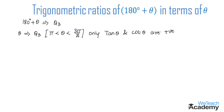Now let us find the values of trigonometric ratios of 180 degrees plus theta in terms of theta. Let us begin with sine. So sine of 180 degrees plus theta: since 180 degrees plus theta lies in the third quadrant, and in the third quadrant only tan and cot are positive, sine becomes negative. Also, 180 is an even multiple, so sine remains sine. Therefore, sine(180° + θ) = −sin θ.